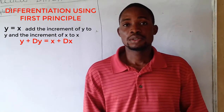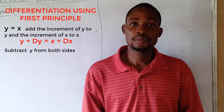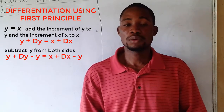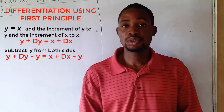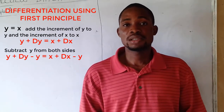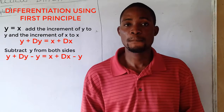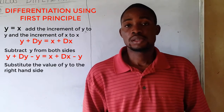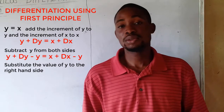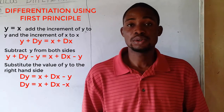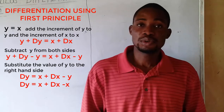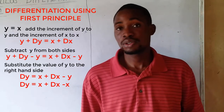The second step is to subtract y from both sides, which becomes: y plus δy minus y equals x plus δx minus y. The y's cancel on the left-hand side. Then we substitute the value of y from the question into the right-hand side. Since y equals x, the right-hand side becomes x plus δx minus x.